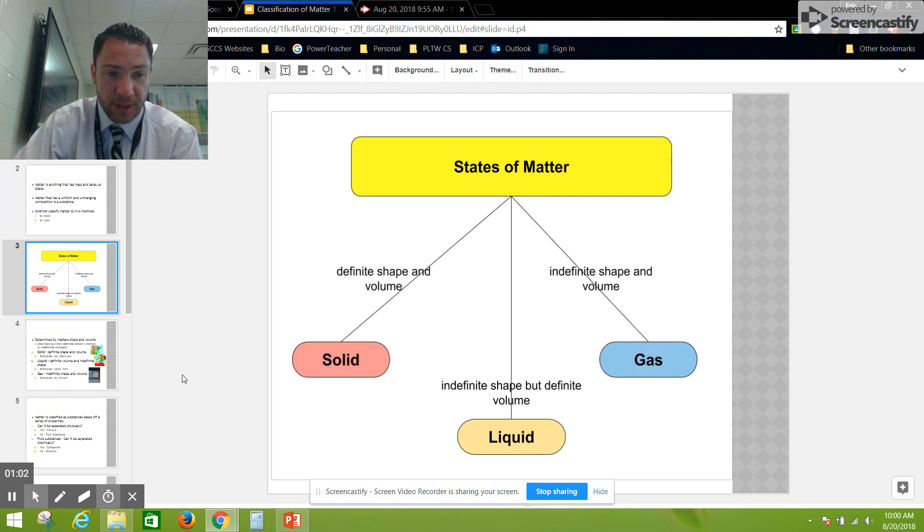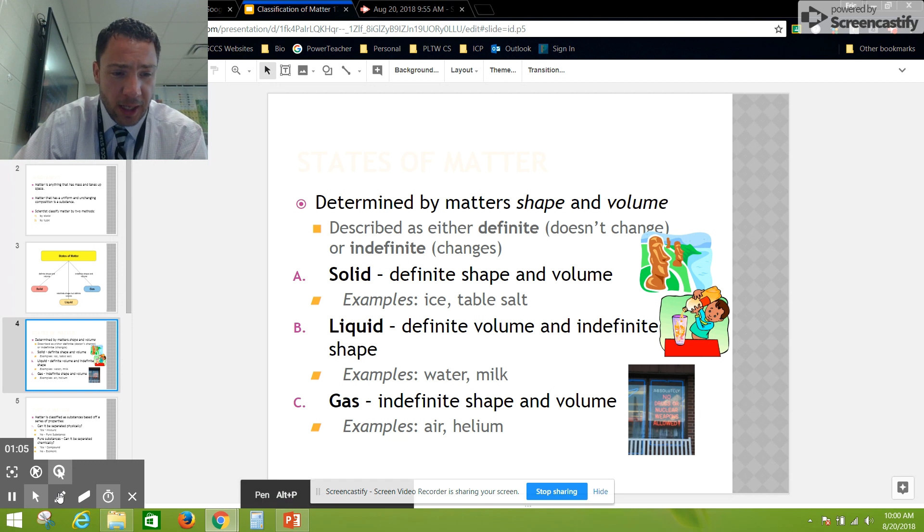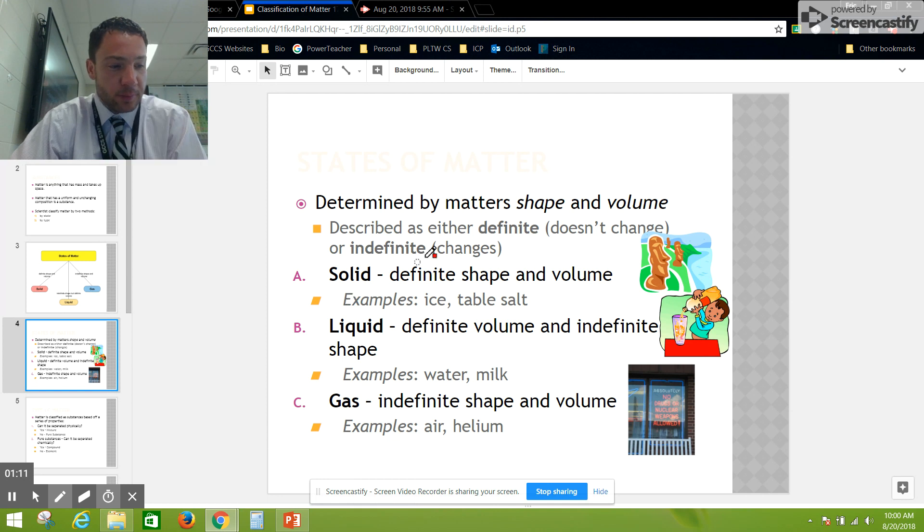Let's talk about how we separate these three states. State is determined by matter's shape and its volume. We describe these two things, shape and volume, as either being definite, meaning it doesn't change, or indefinite, meaning it can change.